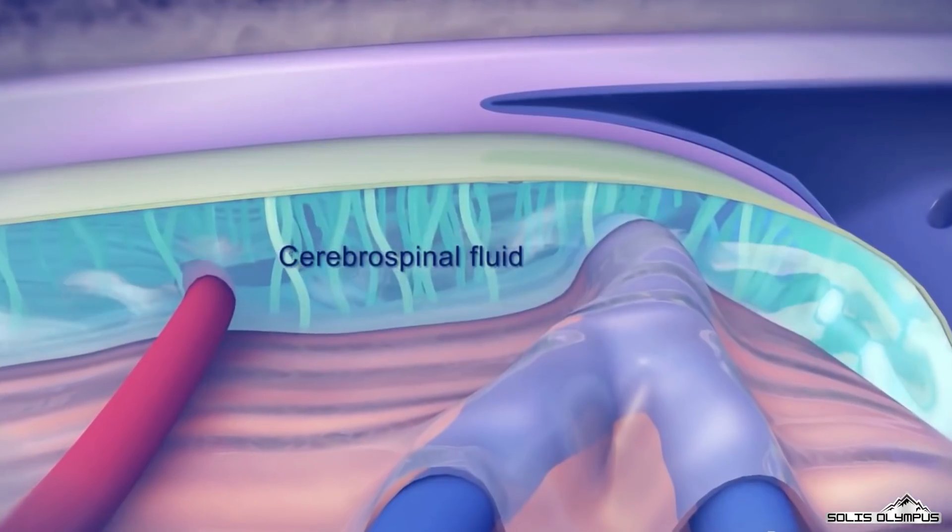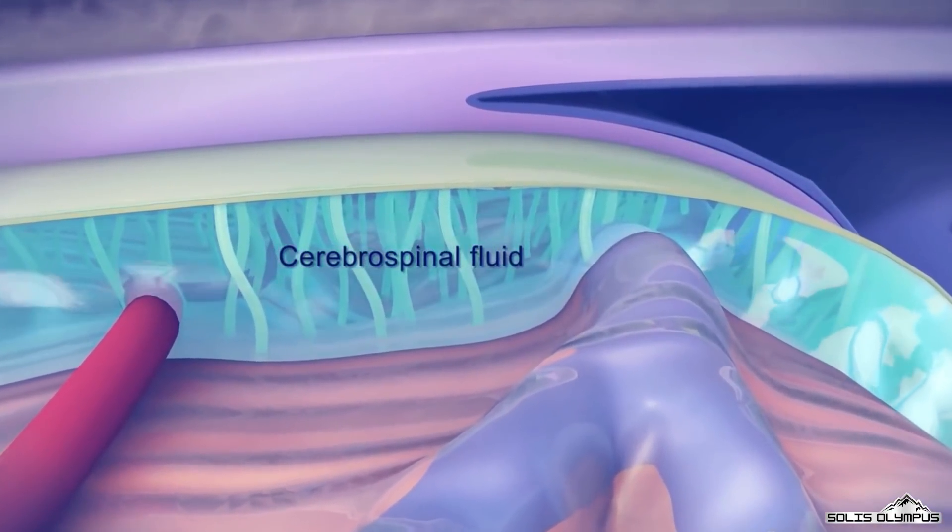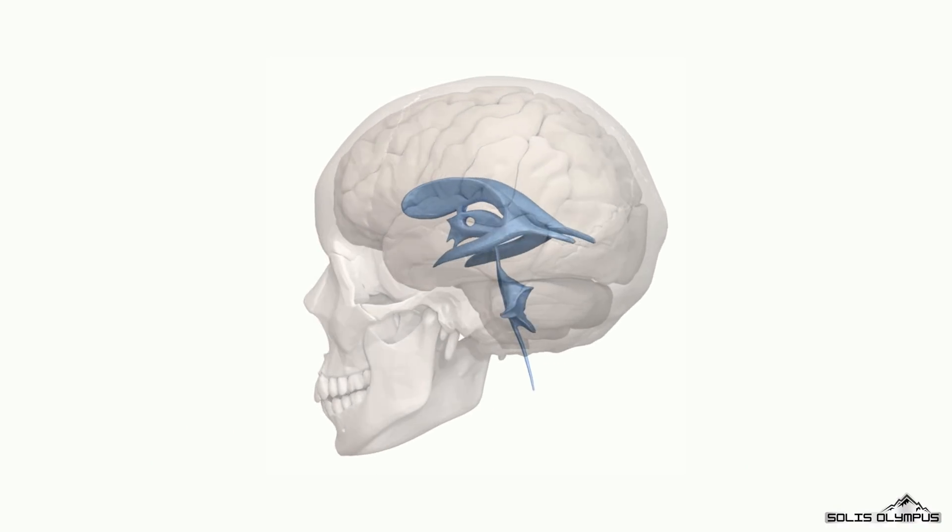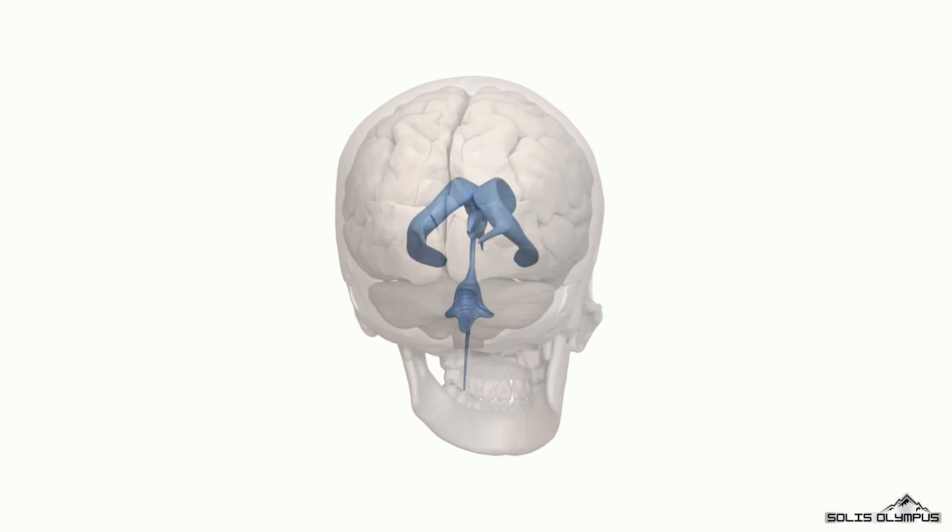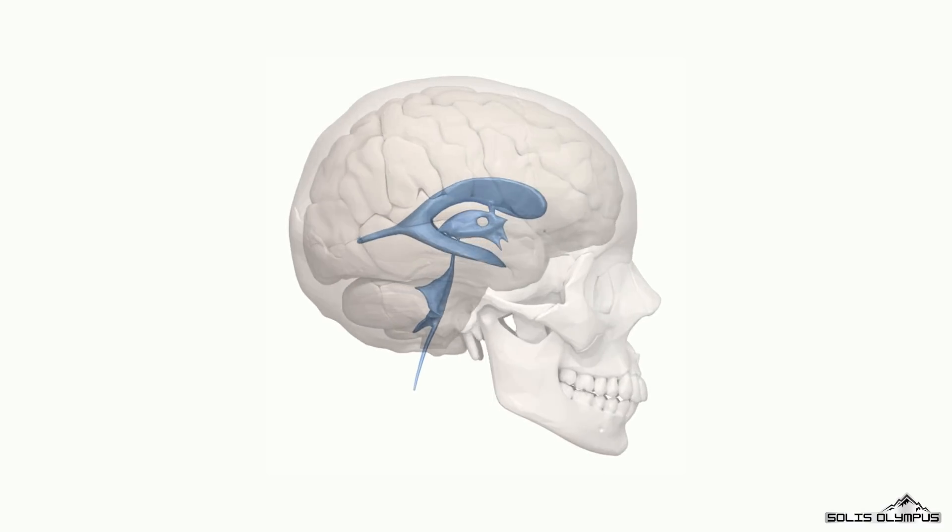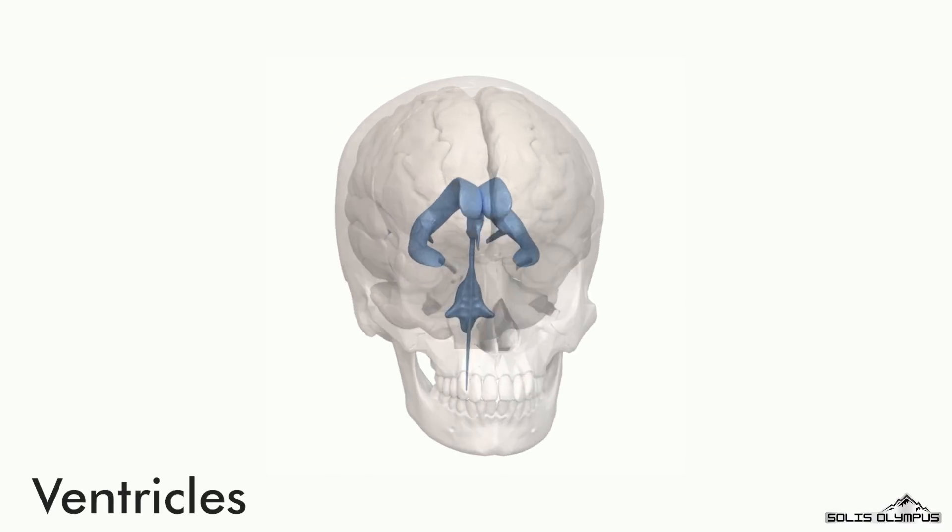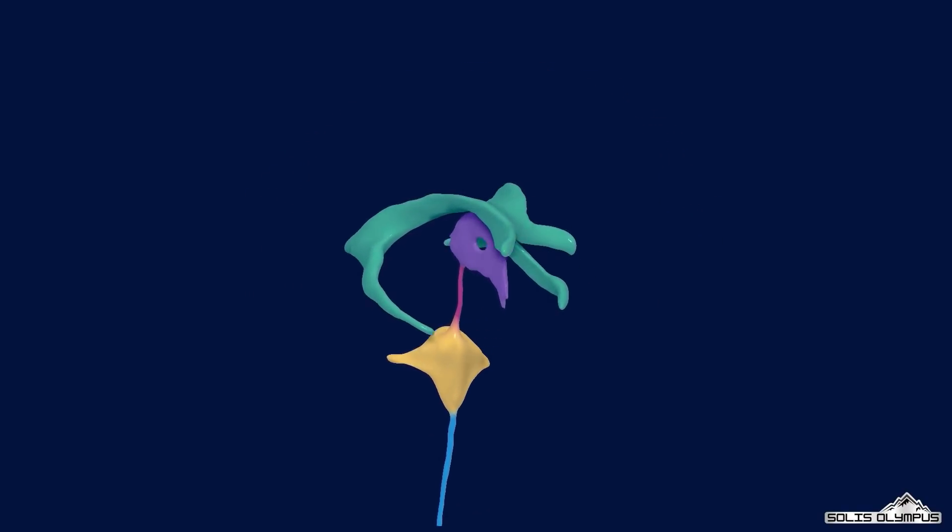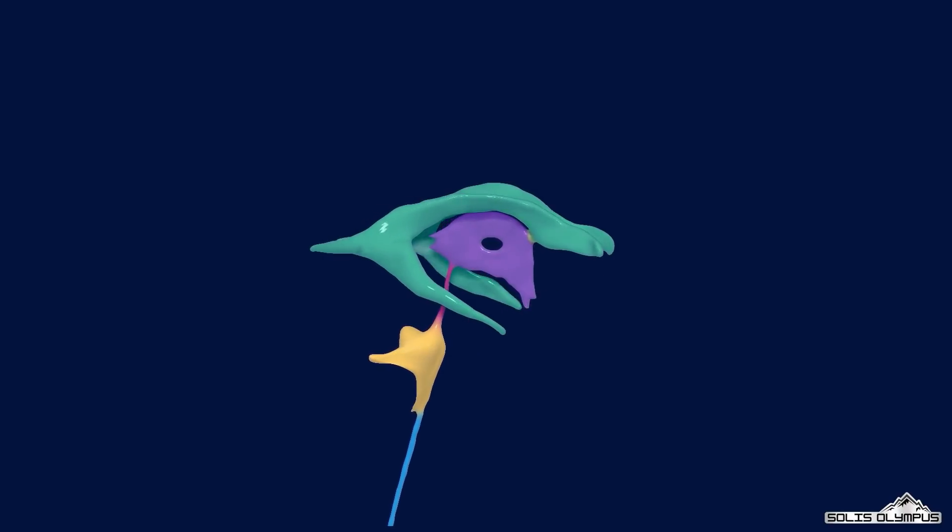The space between the dura and arachnoid layers is filled with cerebrospinal fluid. The brain also has hollow cavities deep inside containing cerebrospinal fluid. These cavities are called ventricles. There are four ventricles in the brain, and the fluid in them helps to cushion the brain and spinal cord from injury.